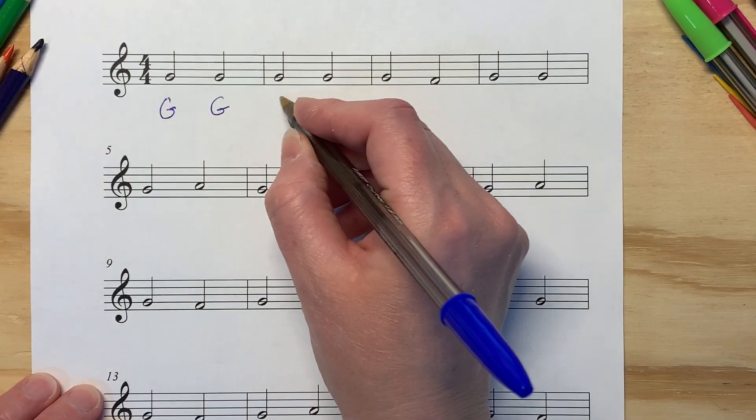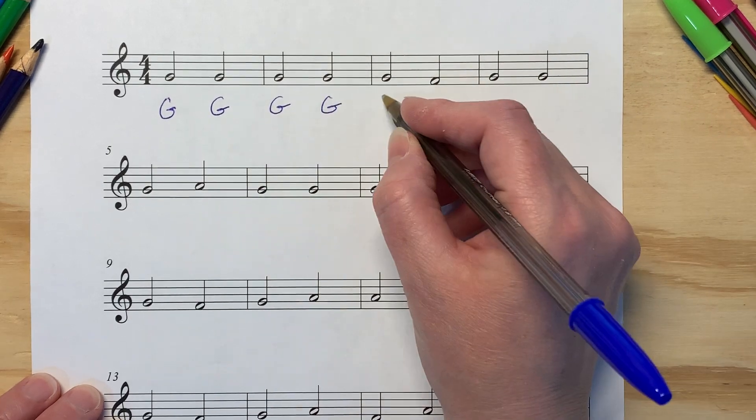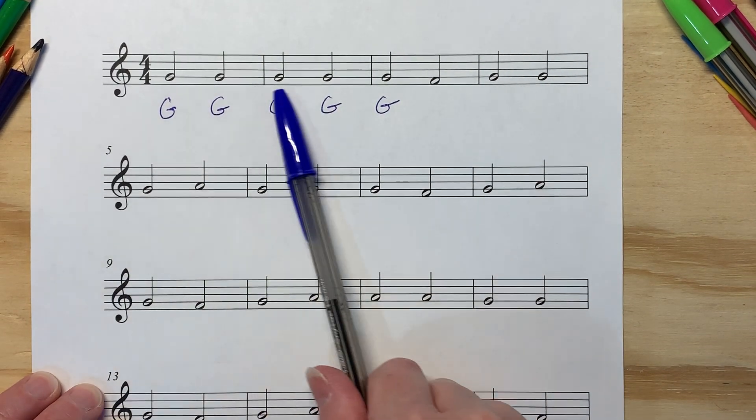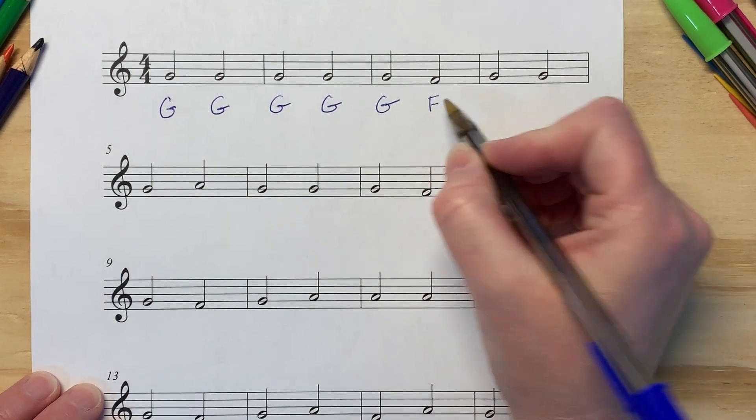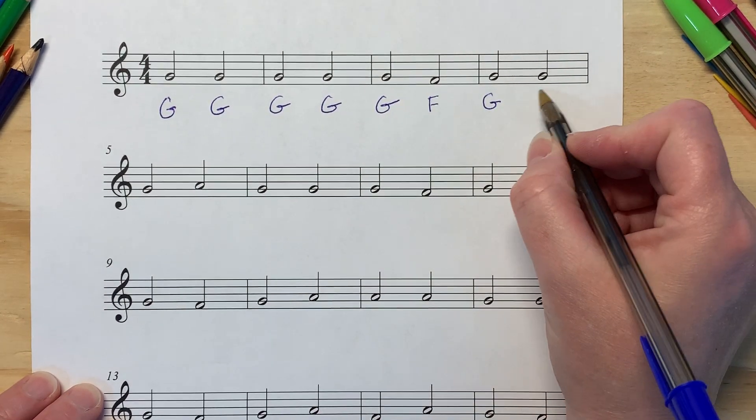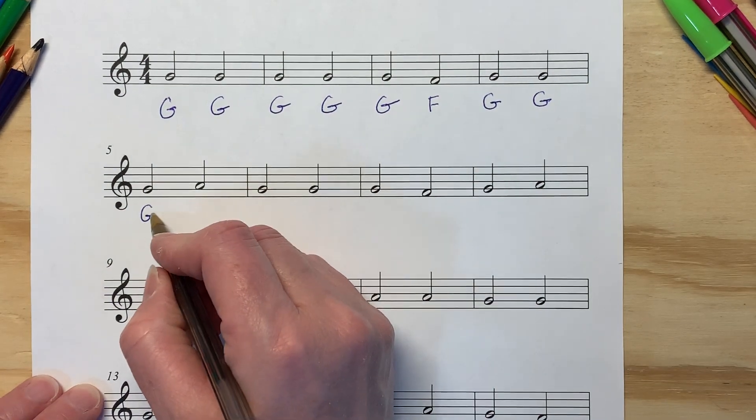We've got G, G, G. Now, if this was actually your music, you wouldn't need to write a G every single time because they're in a row. You write the first one, you can recognize it. It moves down to an F, up to a G, repeats to a G. And look from here to here, it repeats to a G.